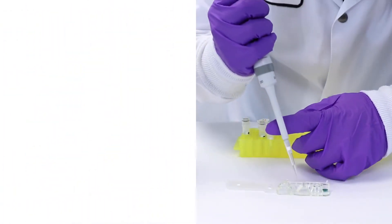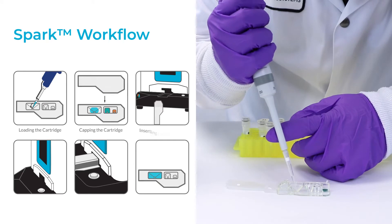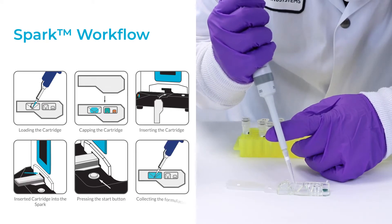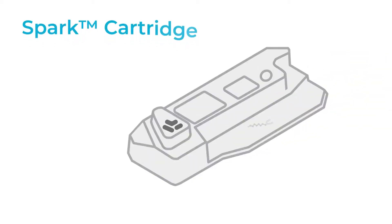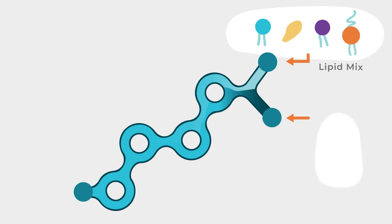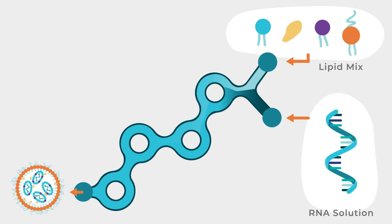Formulating lipid nanoparticles on the Spark is as simple as pipetting. Spark cartridges with next-gen technology are designed to rapidly and consistently mix lipids and solvent with RNA and buffer to control the self-assembly of RNA LNPs followed by on-chip dilution.